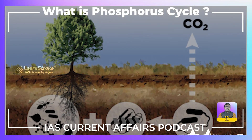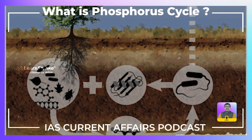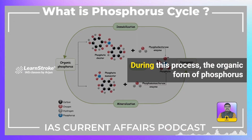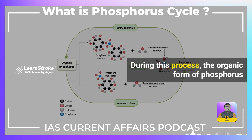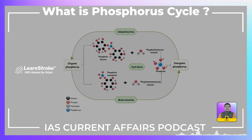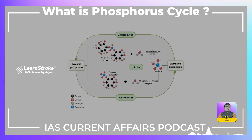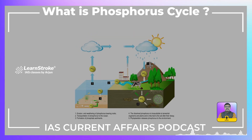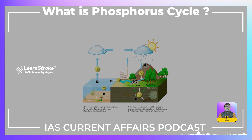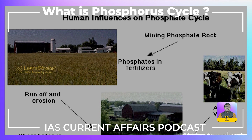How does Phosphorus return back to the ecosystem? When plants and animals die, they are decomposed by microorganisms. During this process, the organic form of Phosphorus is converted into the inorganic form, which is recycled to soil and water. Soil and water will end up in sediments and rocks, which will again release Phosphorus by weathering. Thus, the Phosphorus Cycle starts over.